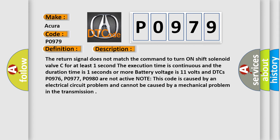The return signal does not match the command to turn on shift solenoid valve C for at least one second. The execution time is continuous and the duration time is one second or more. Battery voltage is 11 volts and DTCs P0976, P0977, P0980 are not active. Note this code is caused by an electrical circuit problem and cannot be caused by a mechanical problem in the transmission.